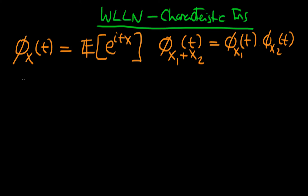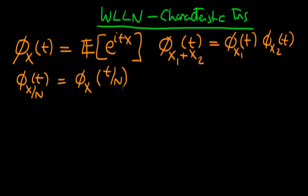The last property we found was that the characteristic function of some random variable x divided by n, as a function of t, is just equivalent to the characteristic function of x as a function of t over n. That just comes about because we multiply t and x together in the exponent.